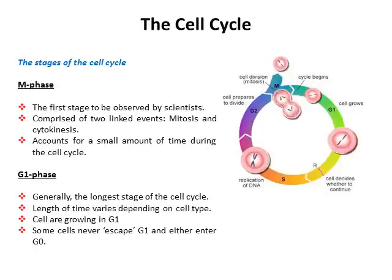In G0, cells enter a restful state where they continue to perform other functions but are not engaged in the process of cell division. Examples of cells in G0 include neuronal cells and cardiovascular cells — cardiomyocytes. These are considered to have undergone terminal differentiation. This phrase doesn't mean the cells are dead — 'terminal' refers to the fact they've made a decision to differentiate into a certain type of cell, and once that decision has been made, those cells are incapable of re-entering the cell cycle and continuing to divide.